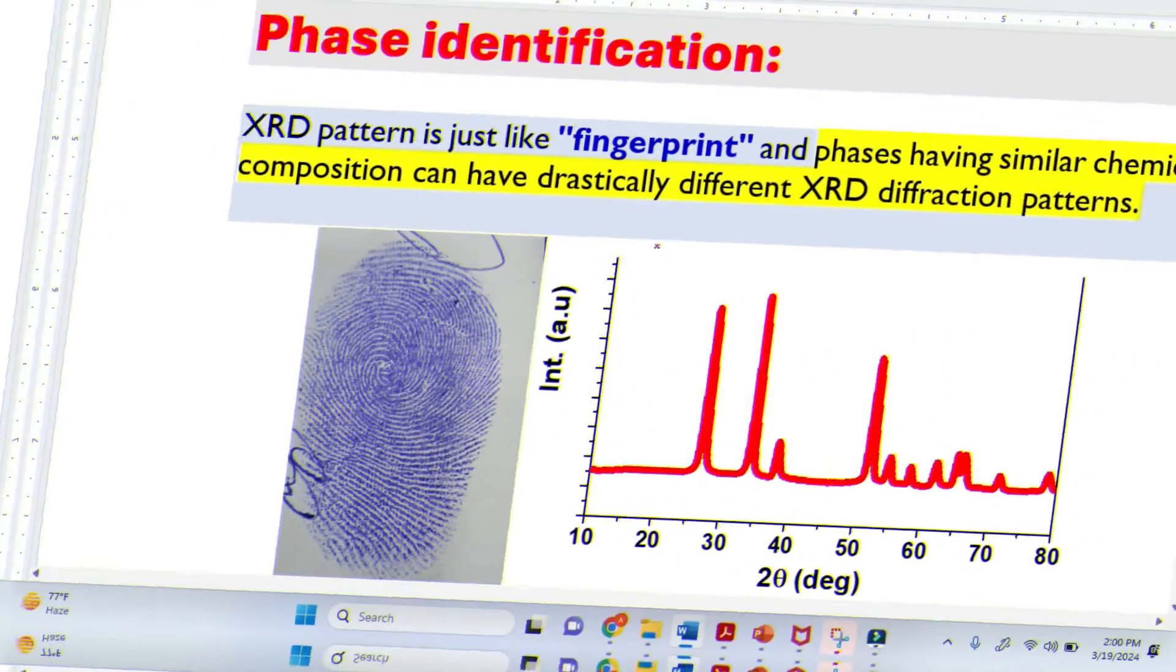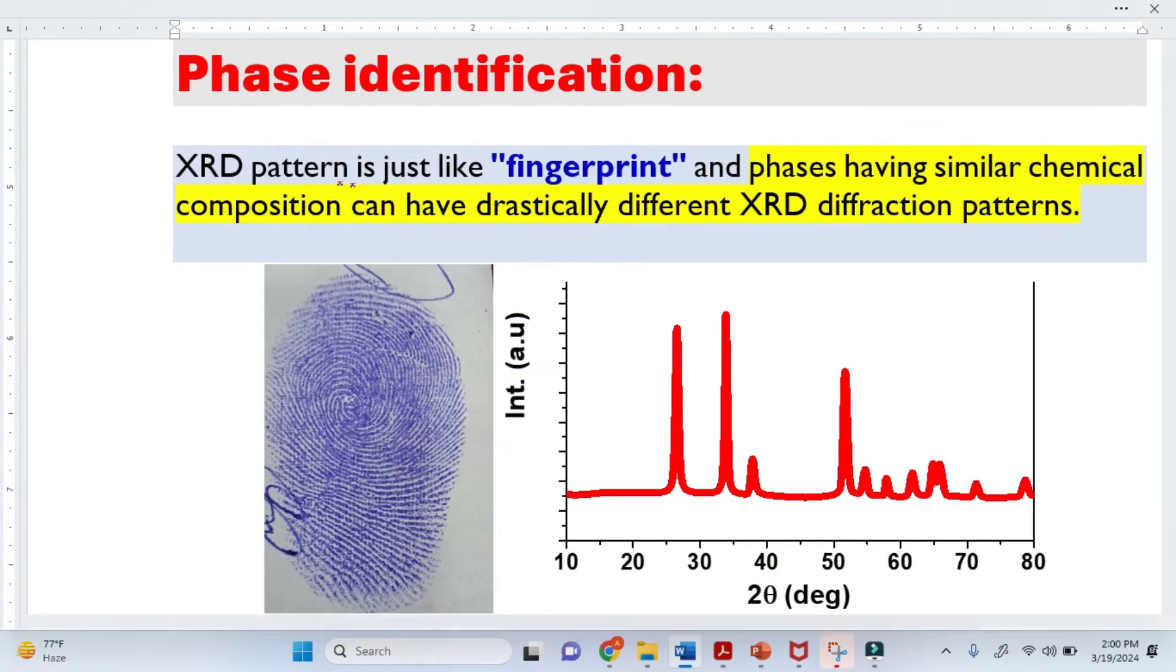So what is phase identification? XRD pattern is just like the fingerprint. This is my fingerprint and it belongs to me. Because of this fingerprint, people can recognize me, machines can recognize me. Similarly, once we have this pattern, we can easily recognize what type of phases exist in a material.